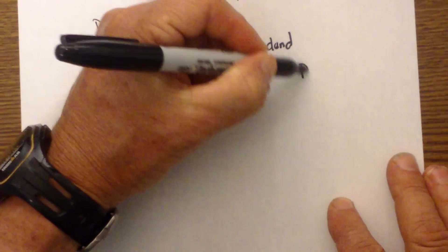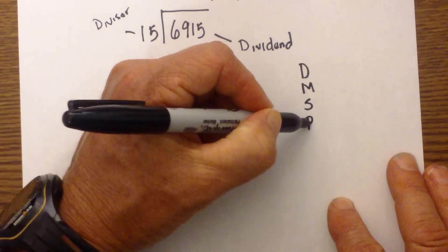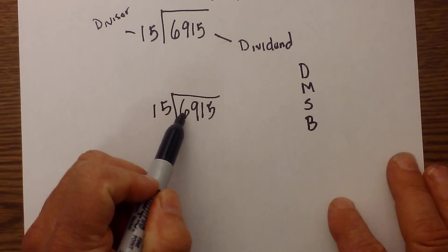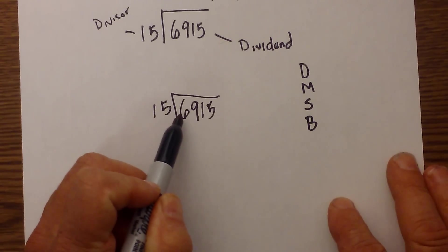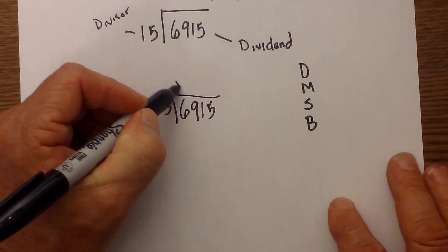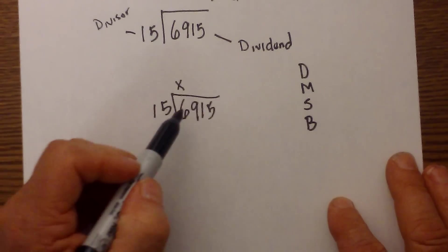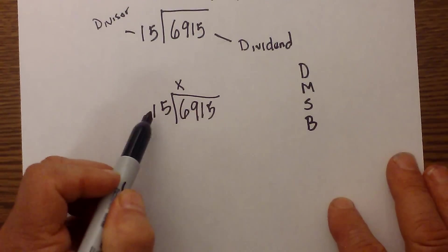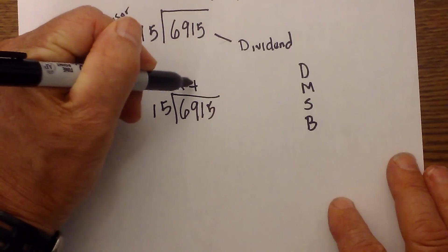Remember we are going to use dad, mom, sister, brother. We are going to start division first. We are going to divide 69 by 15. 15 will not go into 6 because 6 is smaller than 15. If you would like you can put an x here so you won't be confused. 69 divided by 15. 15 goes into 69 four times.